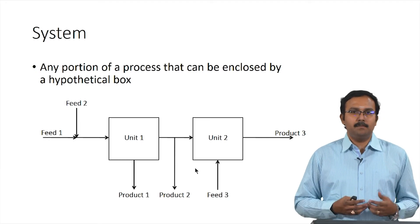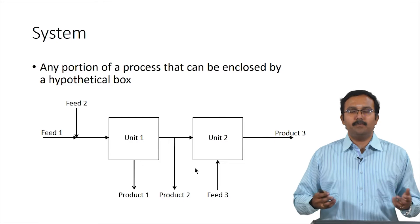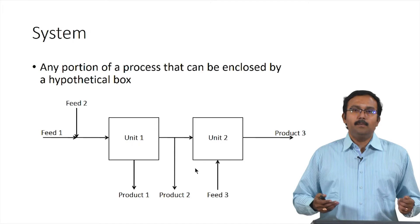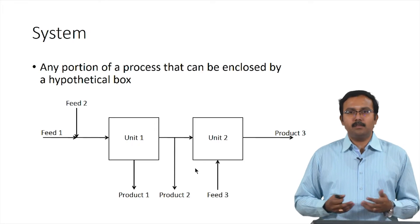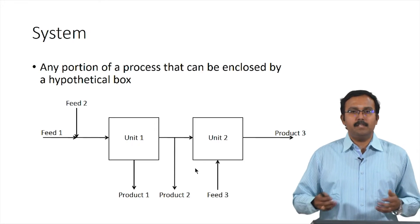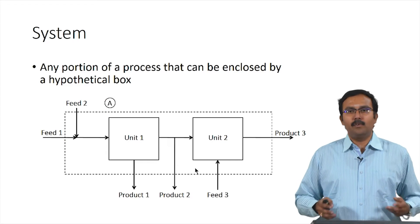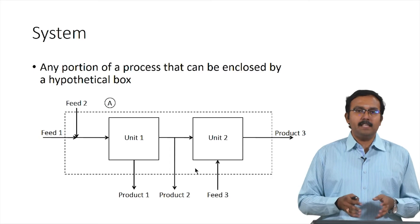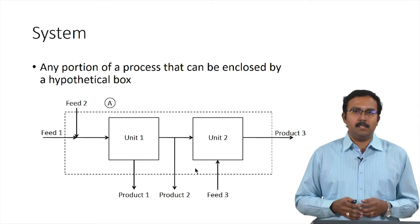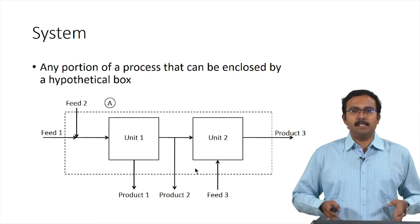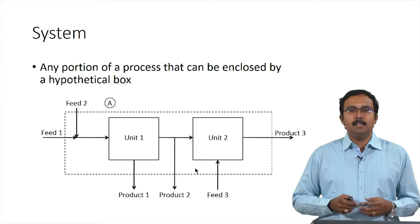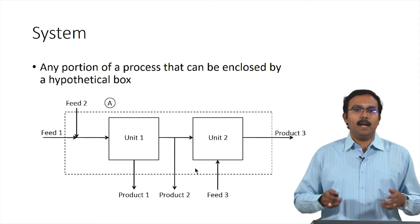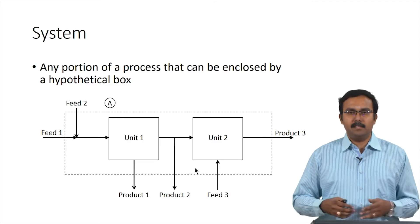A system was defined earlier as any portion of a process that can be enclosed by a hypothetical box. We can draw the overall system, which encompasses every single unit within the process. This ensures that only feeds cross into the system boundary and only products leave it.